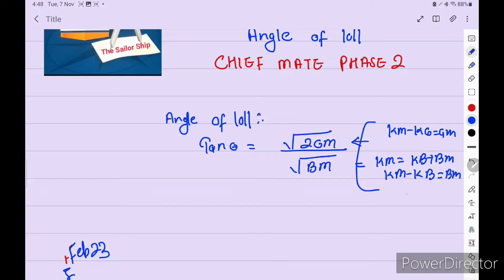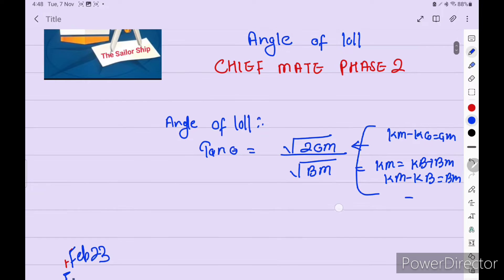So this is 2 way we get the GM and BM. Now, theta is equal to angle of loll. This one, angle of loll. GM is negative metacentric height.